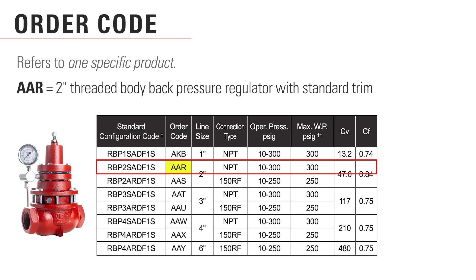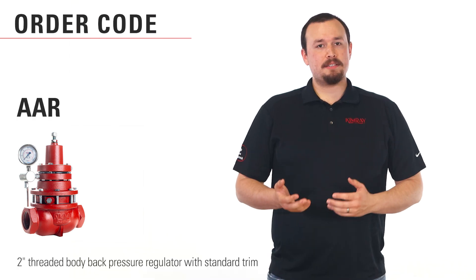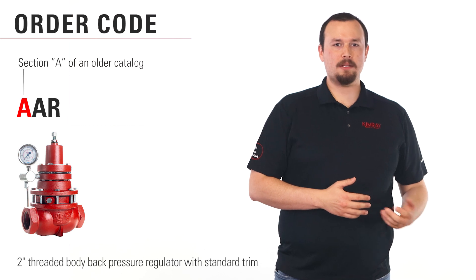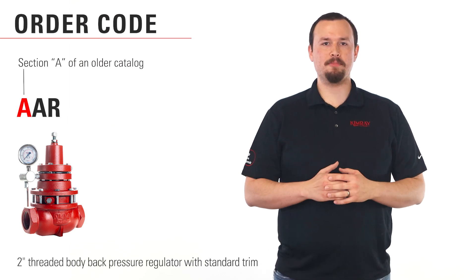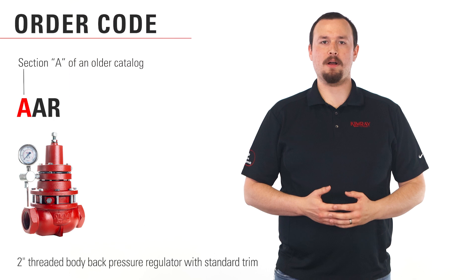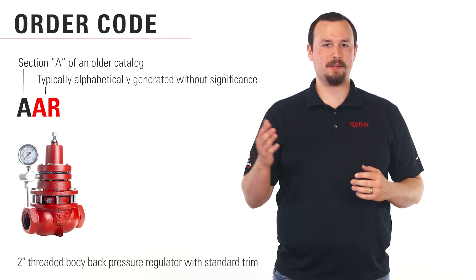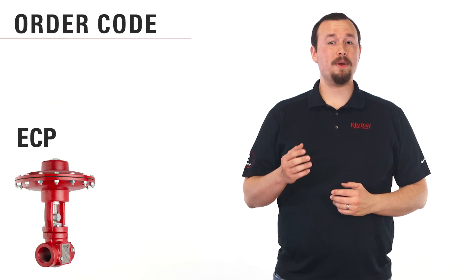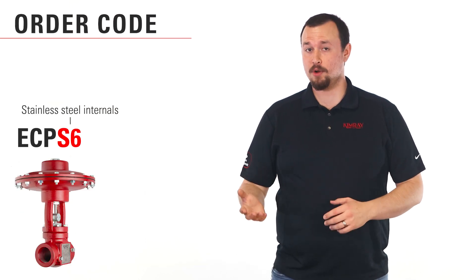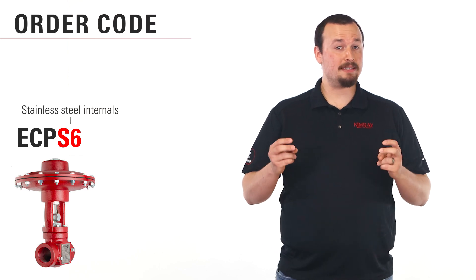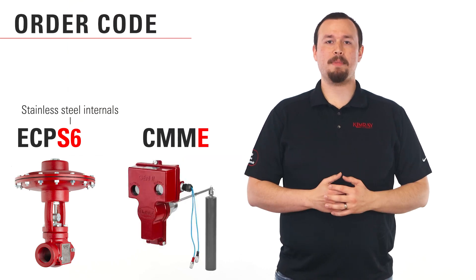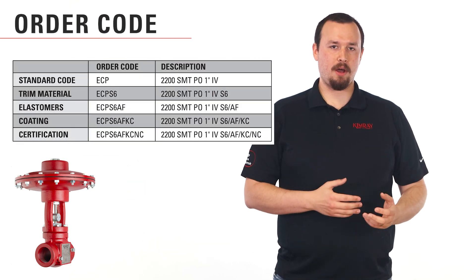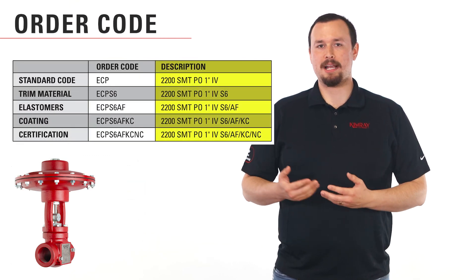You may be wondering where these letters and numbers come from. In most cases the first letter refers to an organizational scheme from an older catalog section for that product. A was simply the first section of the catalog, and the next two numbers are typically alphabetically generated and do not have significance. The order code is not always limited to three letters. Stainless steel internals, for example, may include S6, or an electric product may have an E added to the end. The more suffixes added to the code, the more this code looks like a product description.